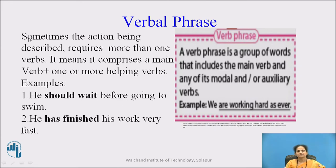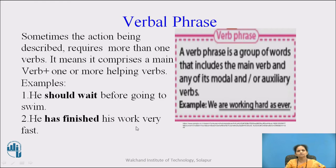The next one is verbal phrase. Sometimes the action being described requires more than one verb — it comprises a main verb plus one or more helping verbs. Examples: 'He should wait before going to swim' — here 'should wait' is a verbal phrase. 'He has finished his work very fast' — here 'has finished' is a verbal phrase. A verb phrase is a group of words that includes the main verb and any of its modal and/or auxiliary verbs.